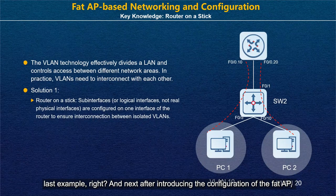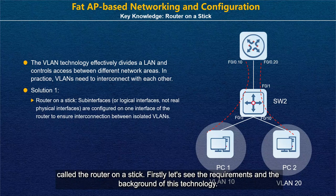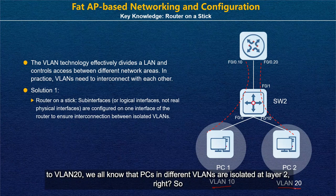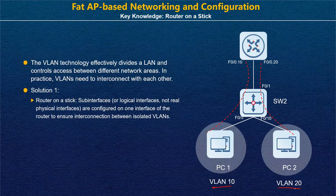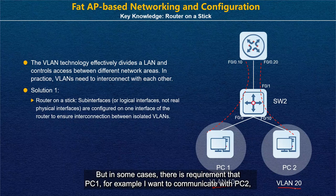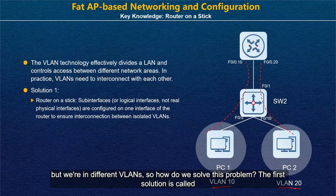Now let's cover two key concepts. The first is Router-on-Stick. In this scenario, we have PC1 in VLAN 10 and PC2 in VLAN 20. PCs in different VLANs are isolated at layer 2, so PC1 cannot communicate with PC2 at layer 2. But in some cases, inter-VLAN communication is required.